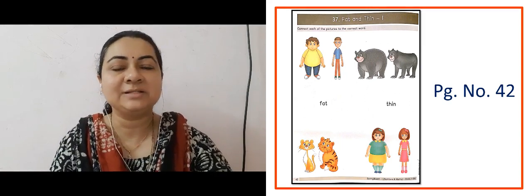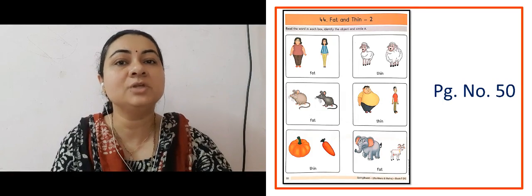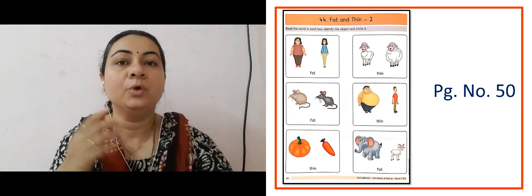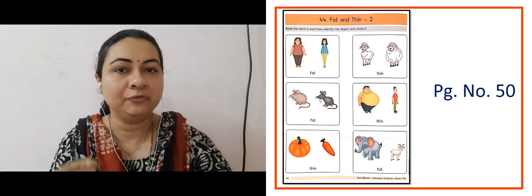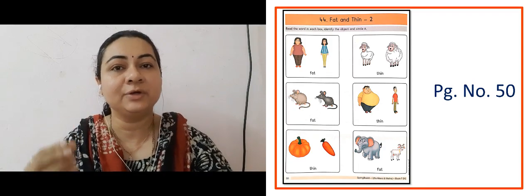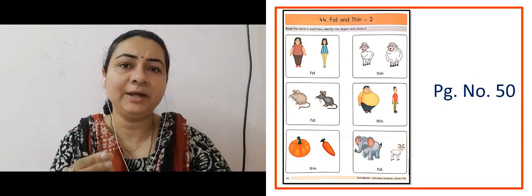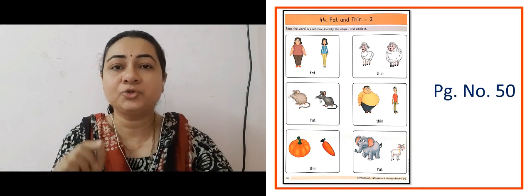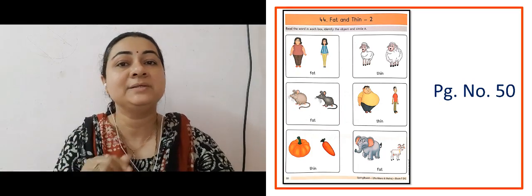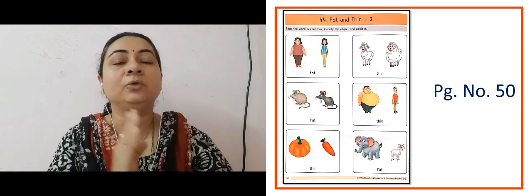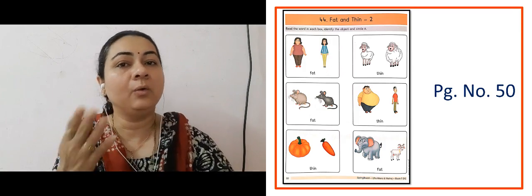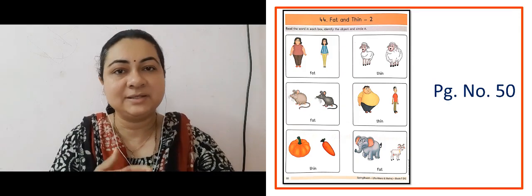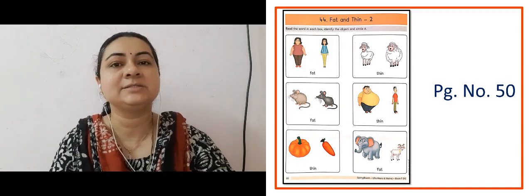The next slide is showing us page 50, Fat and Thin number 2. In each box one word is written. For example, for the first two ladies, fat is written. So we need to circle the fat lady. If thin is written, then we will circle the thin one. We will practice this.